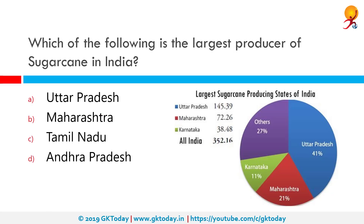Which of the following is the largest producer of sugarcane in India? The correct answer is Uttar Pradesh. You can see on the chart that Uttar Pradesh leads and has the largest area, almost 50% of the cane area in the country, followed by Maharashtra, Karnataka, Tamil Nadu, Andhra Pradesh, Gujarat, Bihar, Haryana, and Punjab. These nine are the most important sugarcane producing states and sugarcane production is highest in Uttar Pradesh.